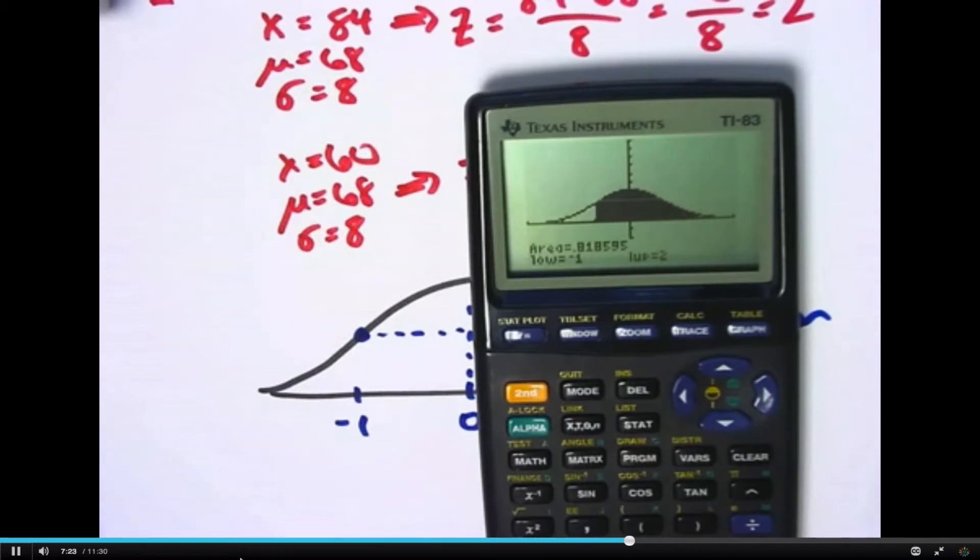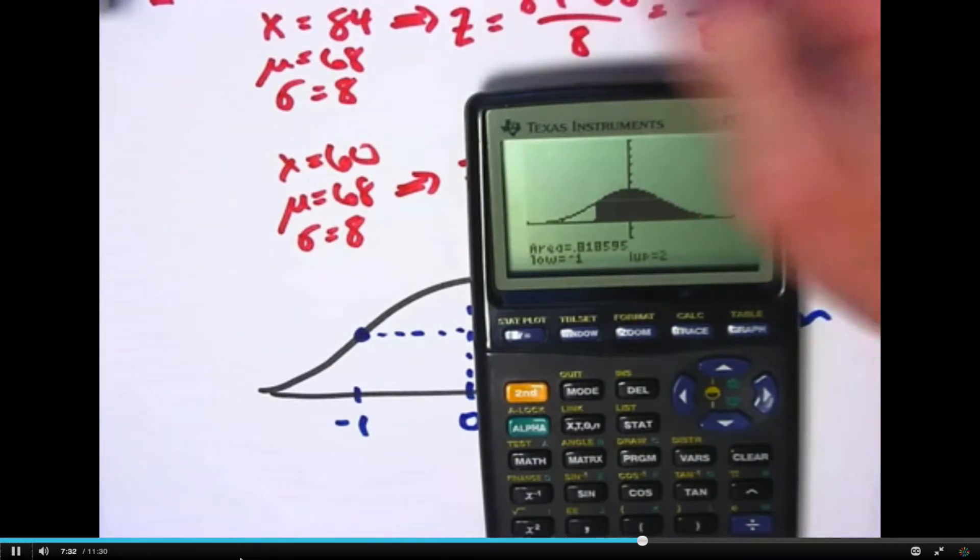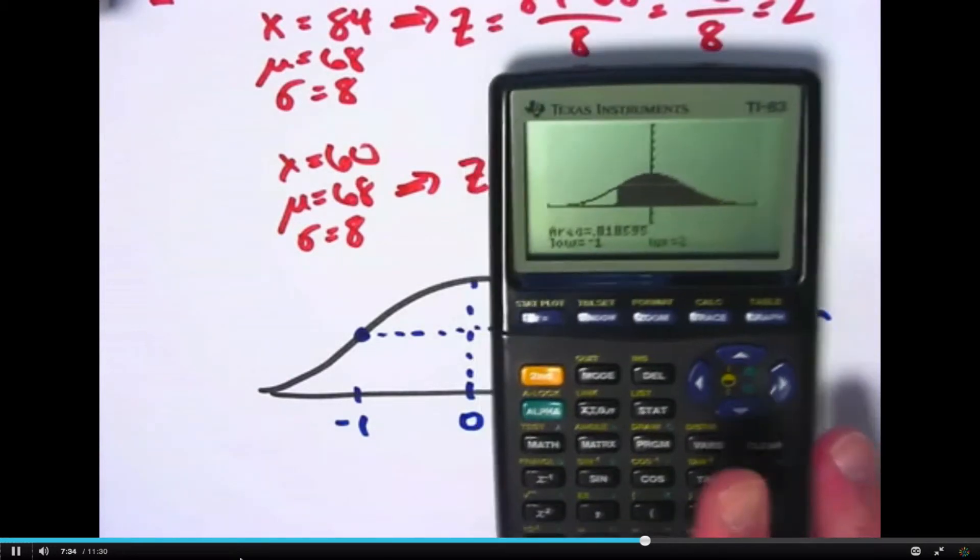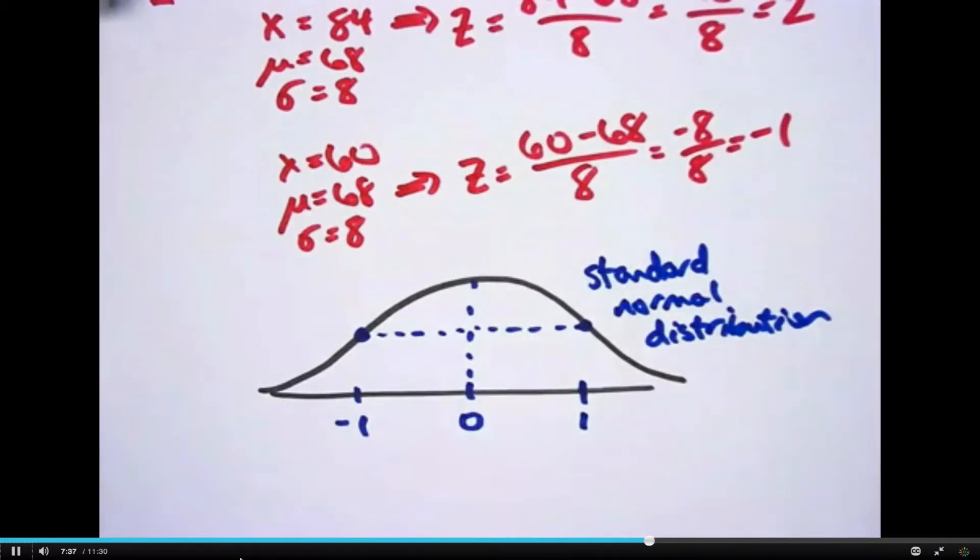And again, if you use a table in a book, they make the tables based on the standard normal distribution, which is partially what z-scores are good for. z-scores can also help us solve the other question.